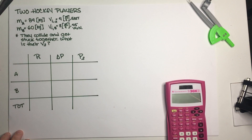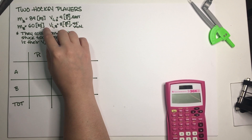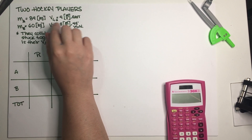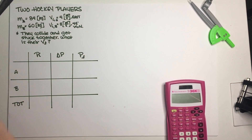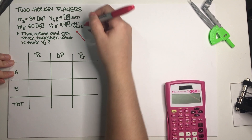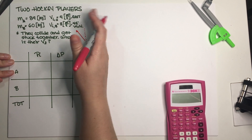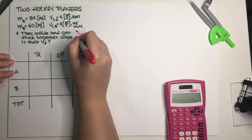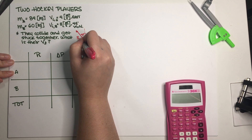I have everything written down here in my notes. I have both of the masses. I decided to call the ice skaters A and B just to keep them separated. A is going 4 meters per second east, B is going 3 meters per second west of north. Whenever you have west of north, you start at north and then go west of that — so this is 45 degrees and the magnitude is 3 meters per second.